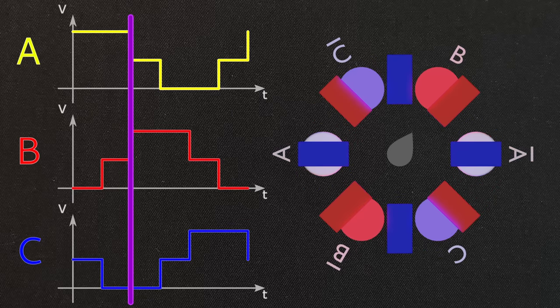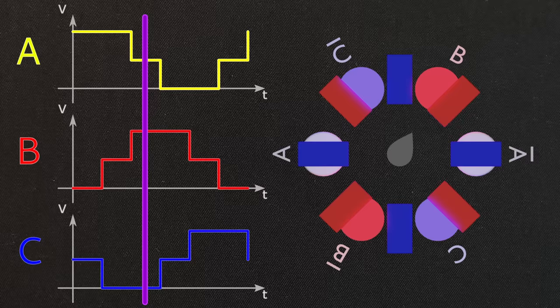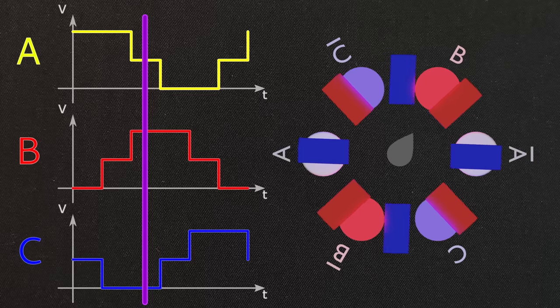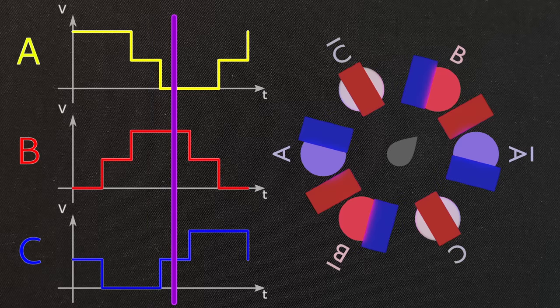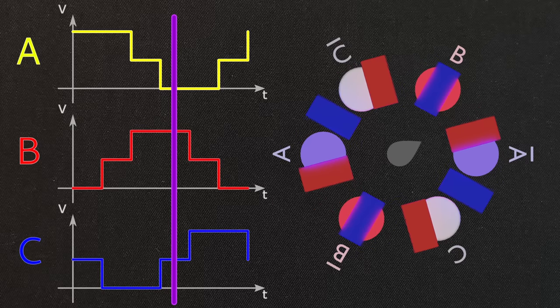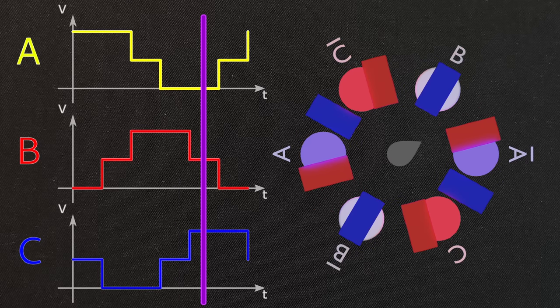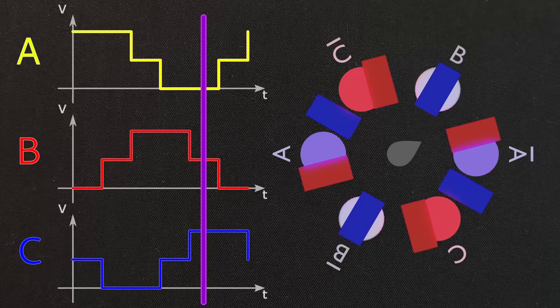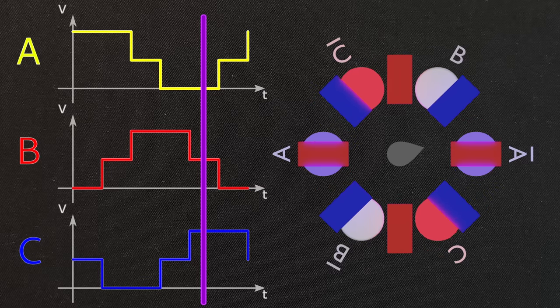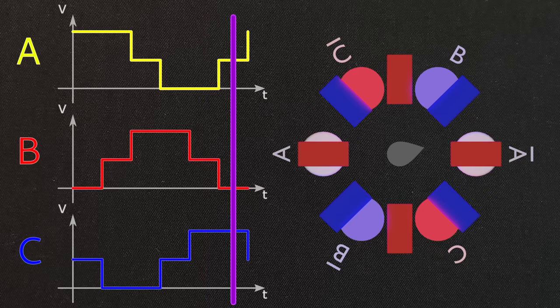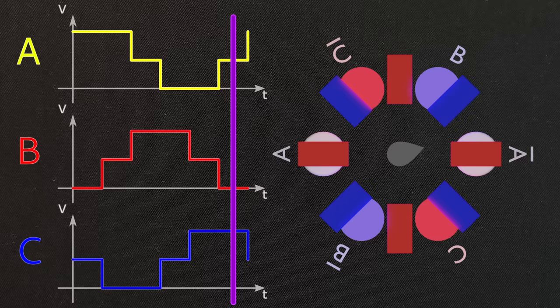Then, phase A gets disconnected, phase B gets connected to power, and phase C remains connected to ground. After which, phase A gets connected to ground, phase B remains connected to power, and phase C gets disconnected. The next step has phase A remain connected to ground, phase B disconnected, and phase C connected to power. And finally, phase A gets disconnected, phase B gets connected to ground, and phase C remains connected to power.